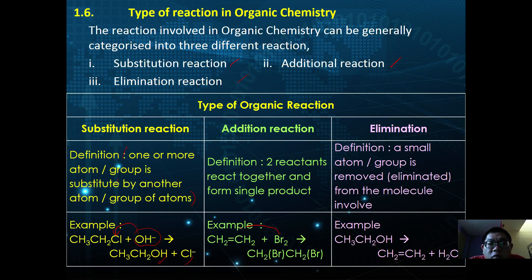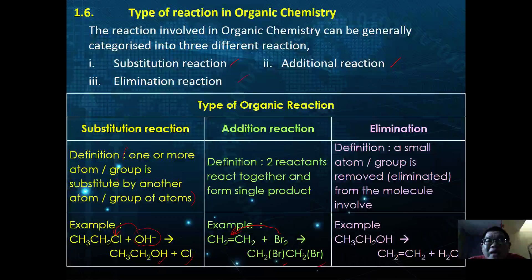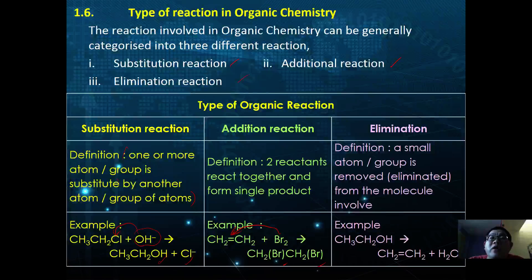In an addition reaction, two reactants combine to form a single product. For example, when bromine is added to an alkene, CH2Br–CH2Br is formed. The double bond disappears and only a single bond remains — no side products are formed. The bromine molecule is directly added to the alkene, hence the name addition reaction.